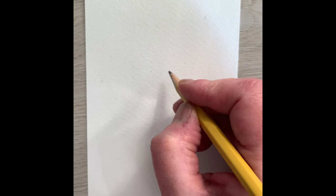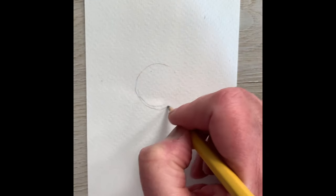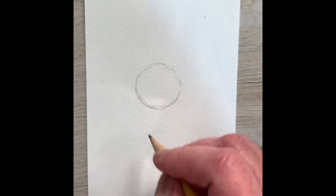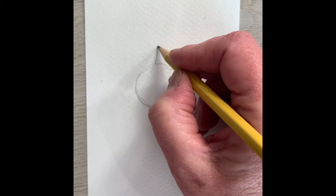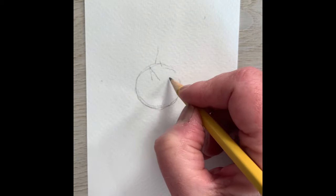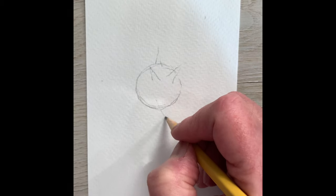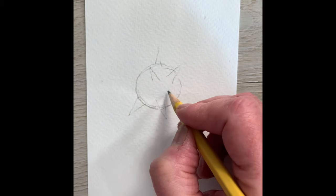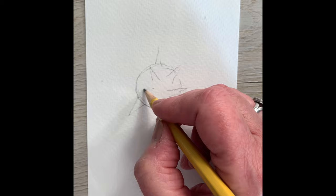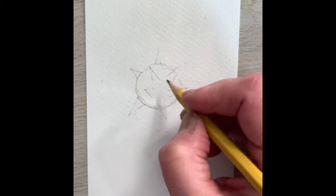To draw this nasty bug, we start with a circle. I usually draw it first with a pencil line, and then I want to put all those corona spikes on it, so I do those lightly, coming out every which way, causing total chaos, especially for those of us over 60.